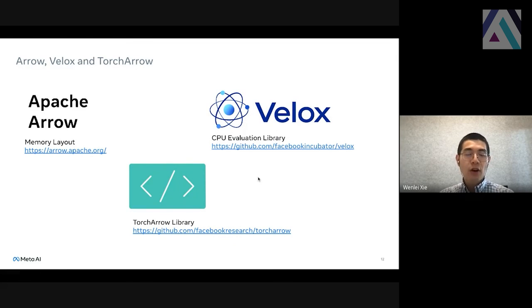We have talked about Arrow, Velox and TorchArrow. The idea is we want to use Apache Arrow as a standard memory layout for column data in the machine learning side. And we want to use Velox as a CPU evaluation library, as well as the UDF authoring. And finally, the TorchArrow library, which is inspired by the Pandas-style syntax, it allows you to glue those things together and allows researchers and engineers to productionize their workload into their warehouse.